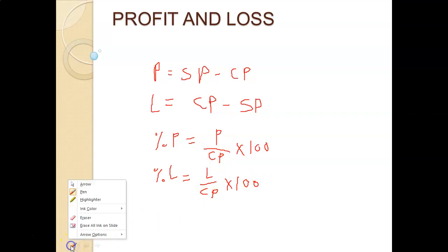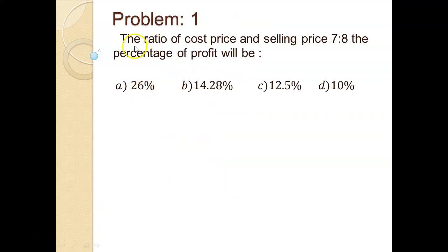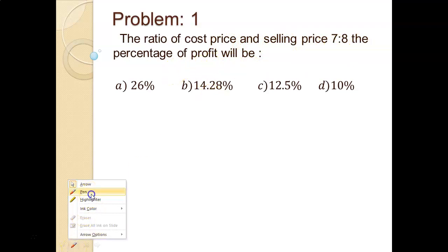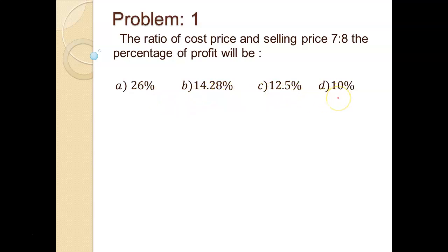So let's start some examples on profit and loss. Problem number 1: the ratio of cost price and selling price is 7 as to 8. The percentage of profit will be. There are four options given: 26%, 14.28%, 12.5%, and 10%. The ratio of cost price and selling price is given as 7 to 8, so CP is 7.